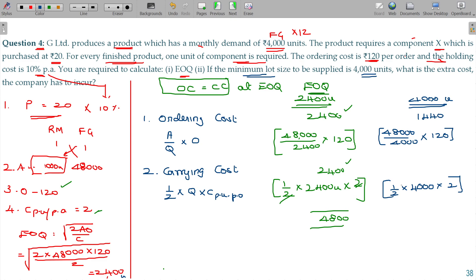Half into the quantity held being 4000 into the carrying cost per unit per annum being 2. So if you cancel this you will get 4000 rupees. Then the overall cost here being 5440. So the additional cost you spend here being 640 rupees. This is the additional cost because of moving from EOQ to the other lot size.